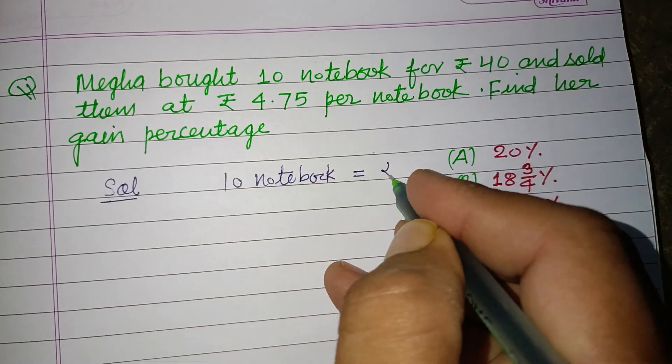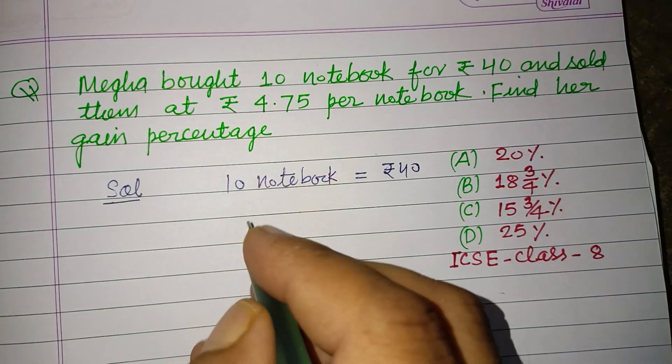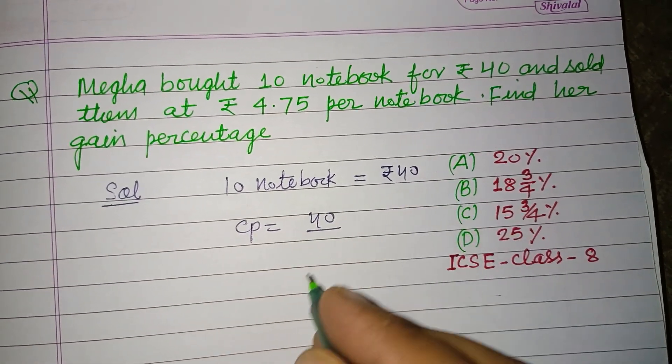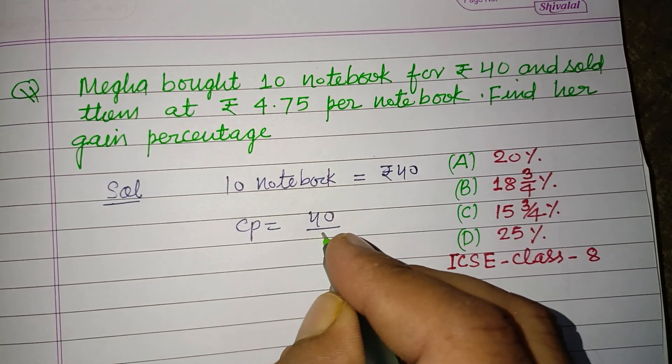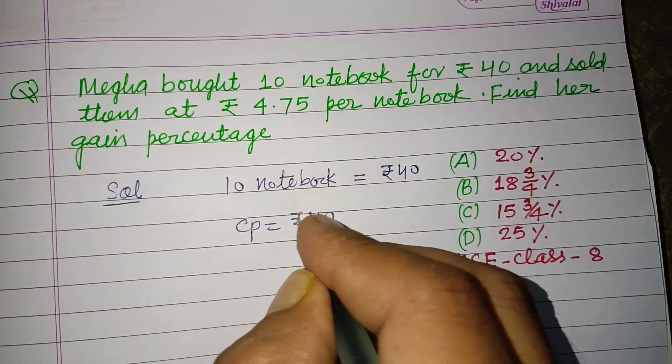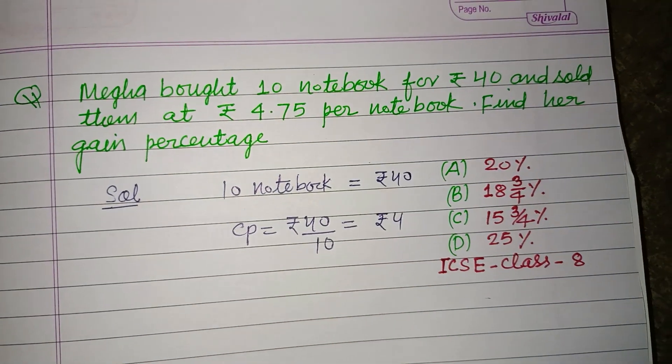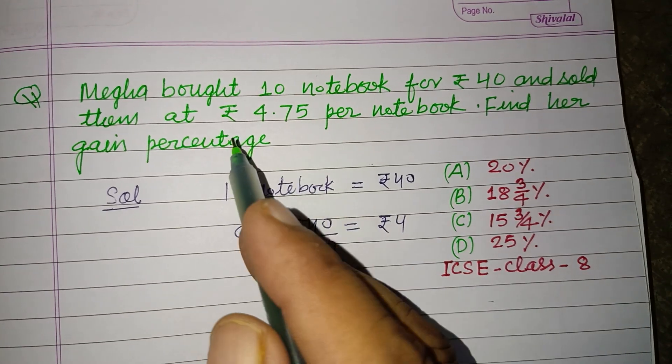So students, here 10 notebooks cost Rs 40. Therefore, the cost price of one notebook is 40 over 10, which equals Rs 4.